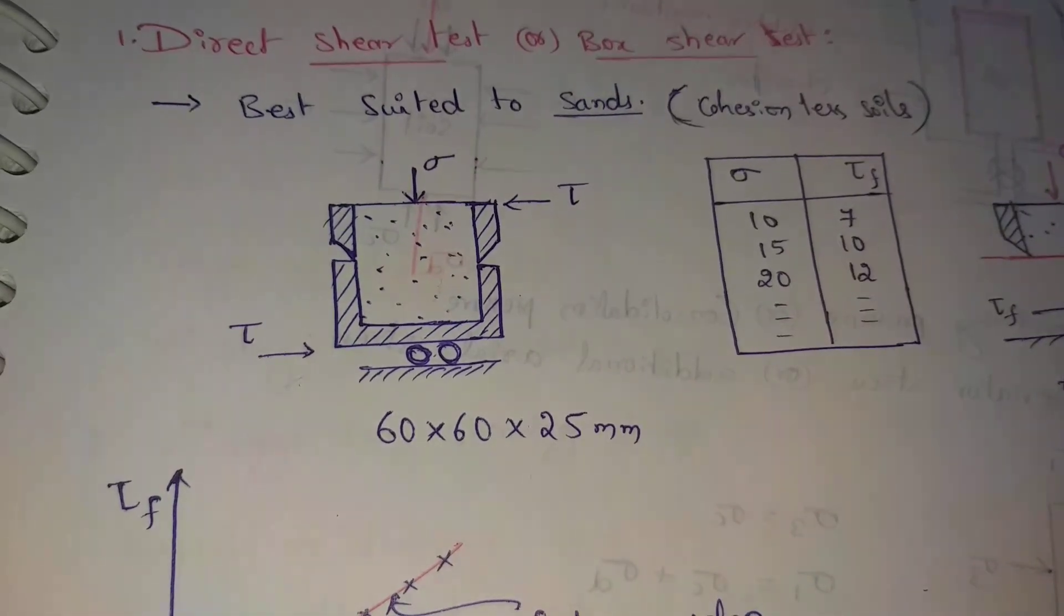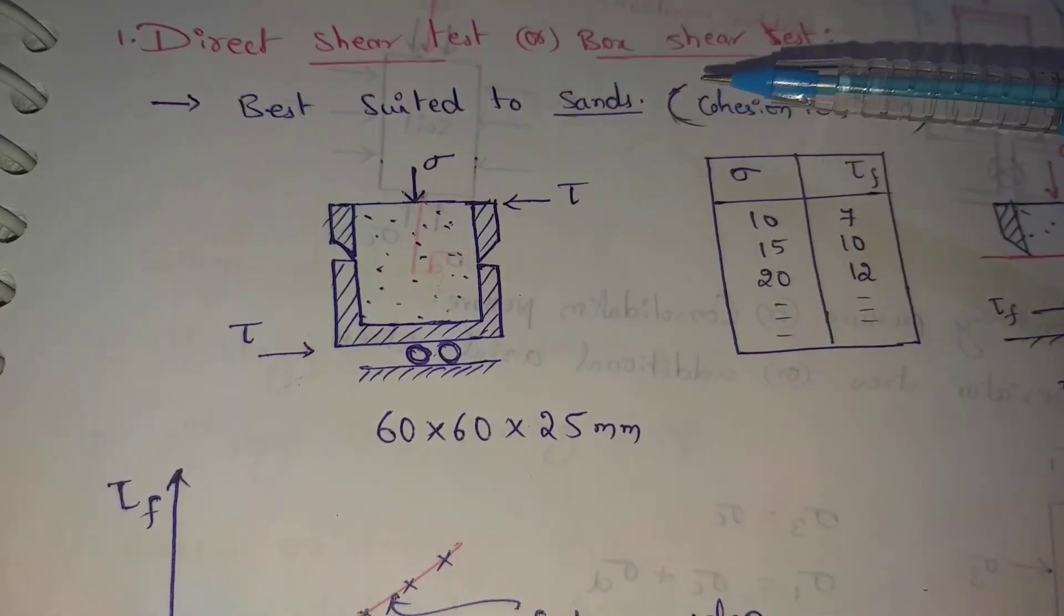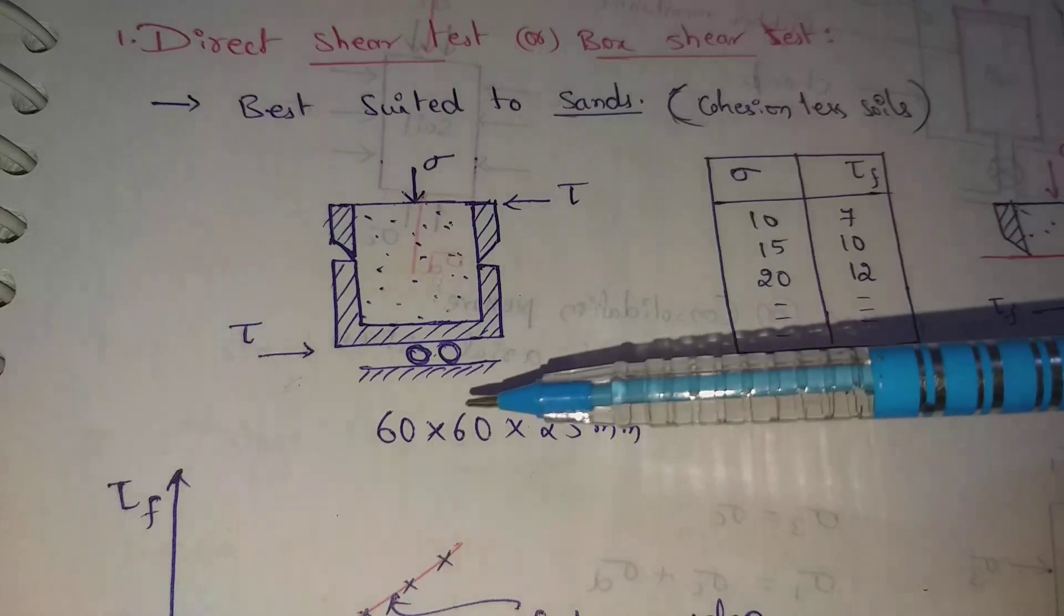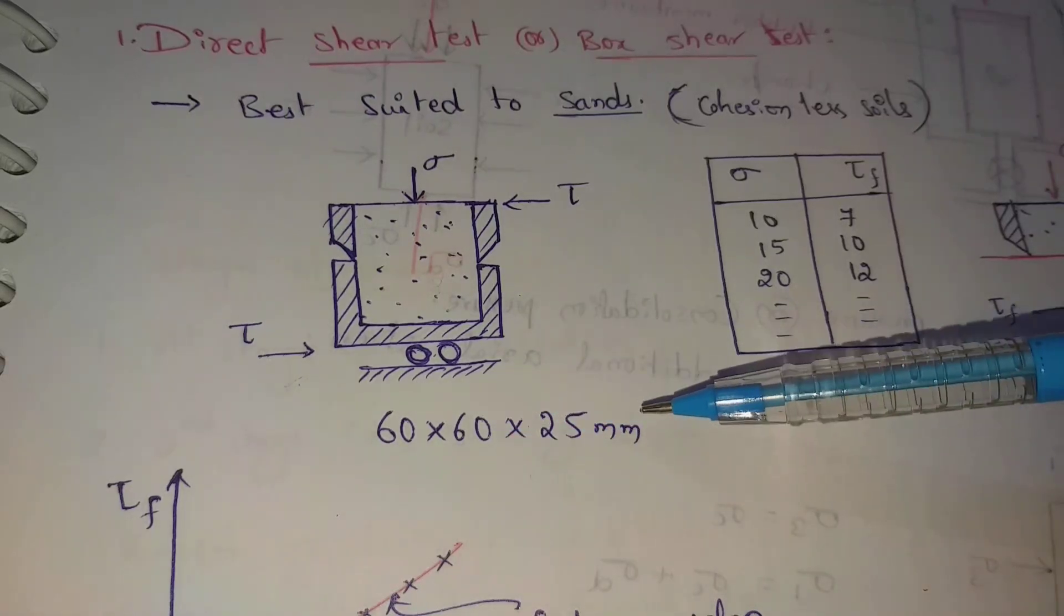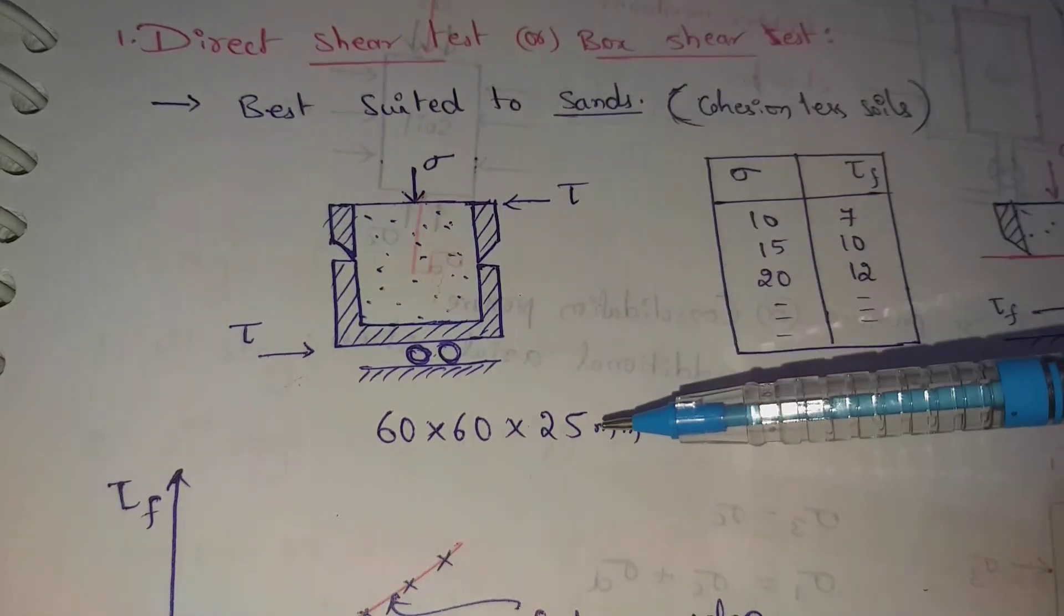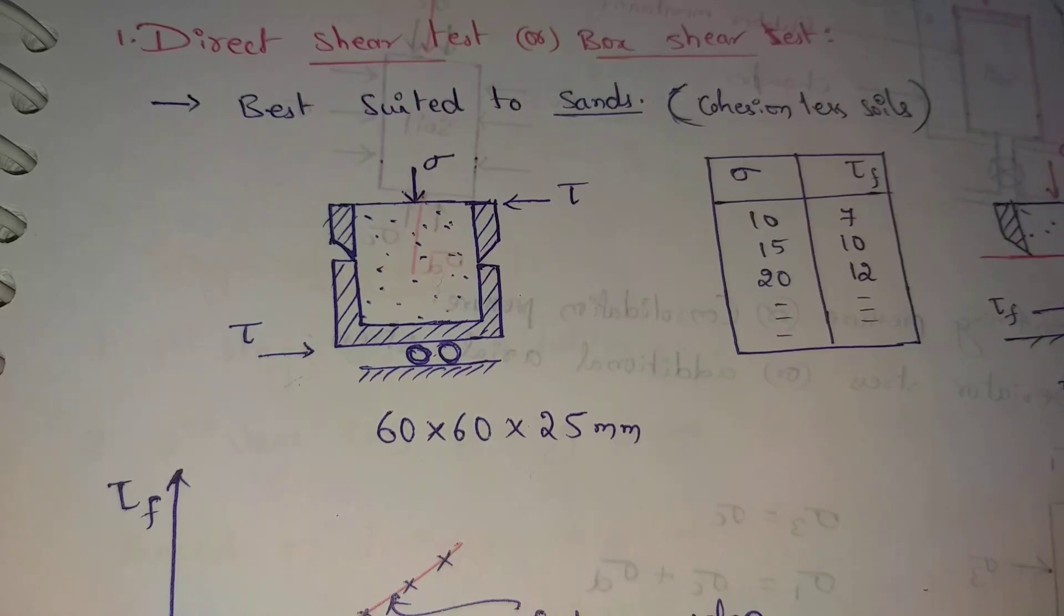Best suited to sands. Actually, we have a soil specimen for the size of 60 by 60 by 25 mm. This one is the size of the soil sample.